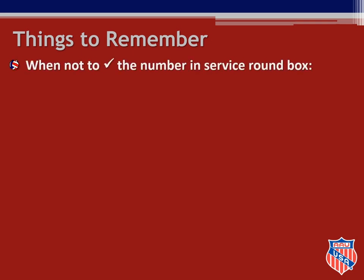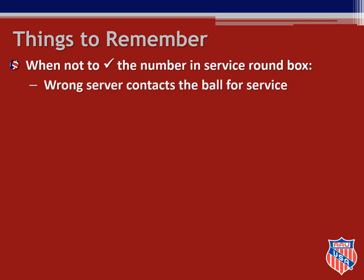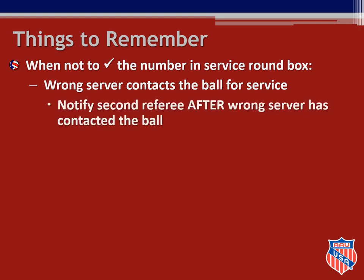There are a few instances where you will not check the number in the service round box. If the wrong server contacts the ball for service, you will not place a check mark on the number in the service round box. This is why it is important that you look at the player every time the ball is contacted for service — you must know when it is a wrong server. If this does occur, you will notify the second referee after the ball has been contacted for service. The referee may let the play continue or she might immediately whistle and signal out of rotation, and may also look at the score sheet to confirm that the player was the wrong server.